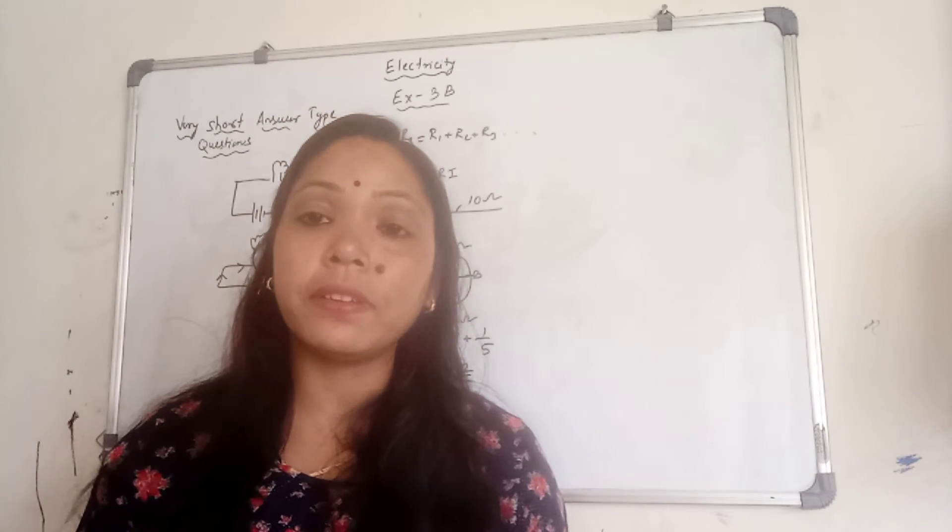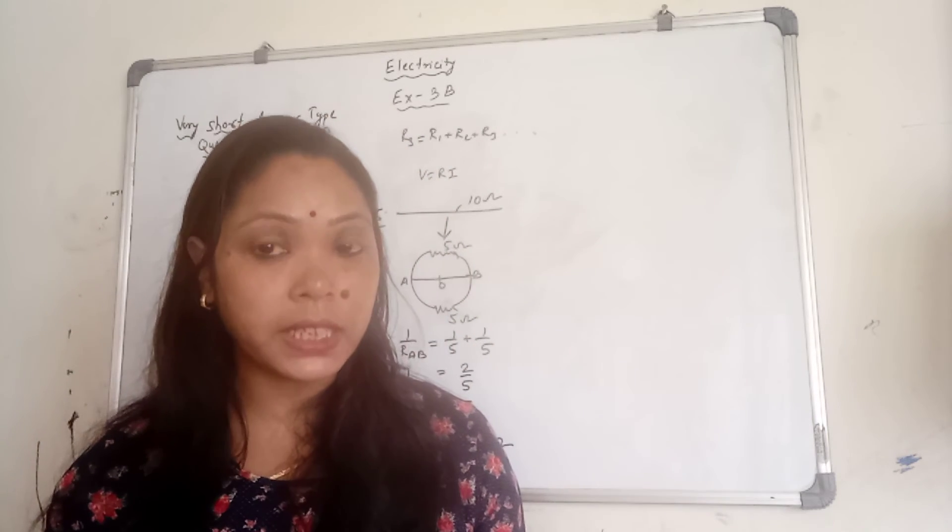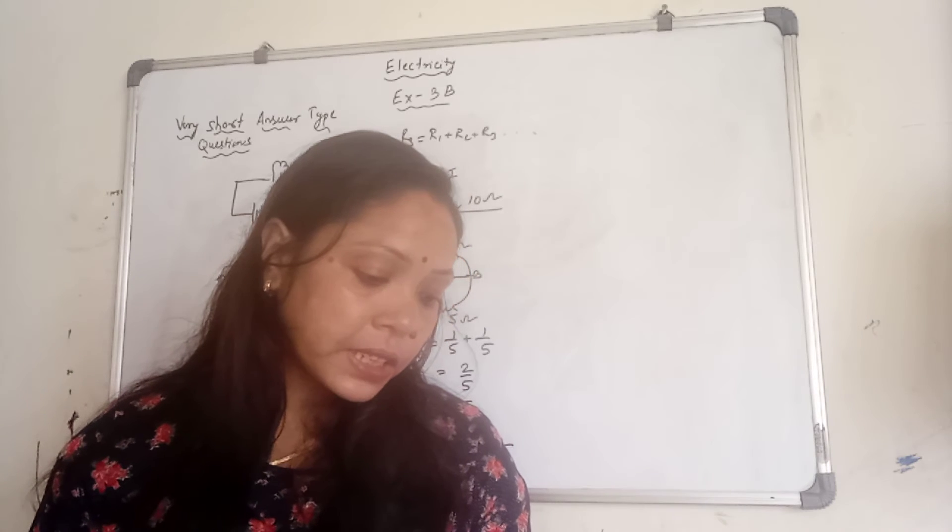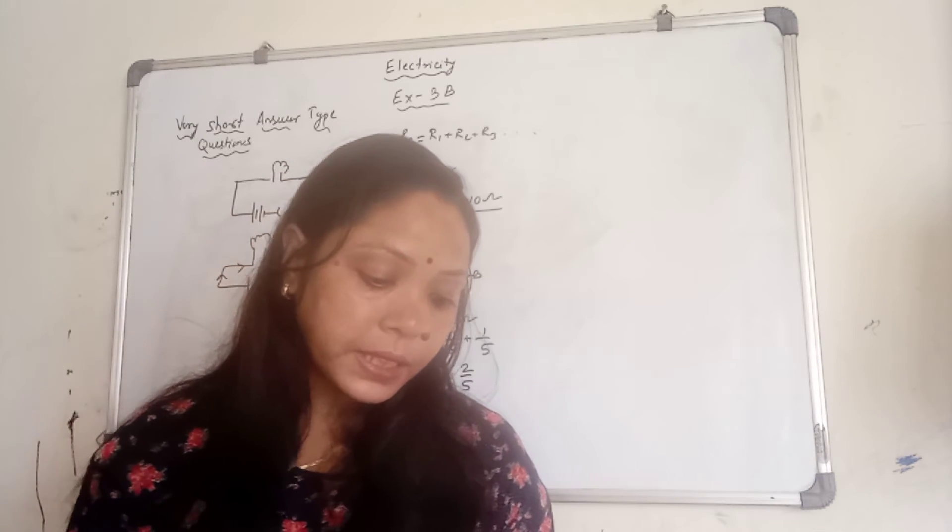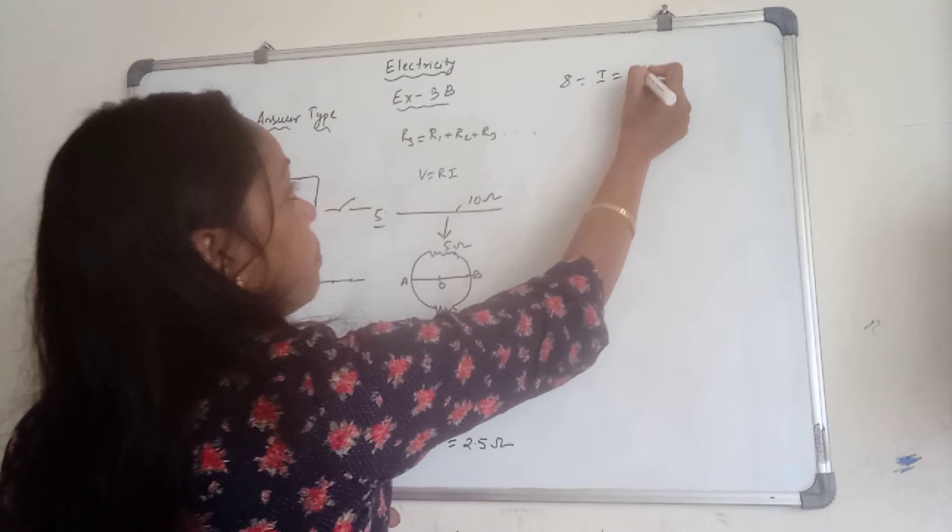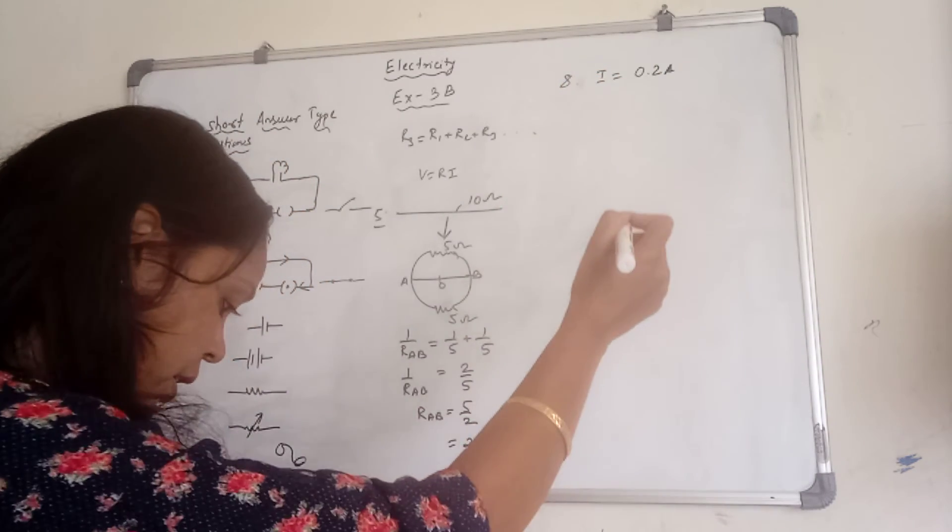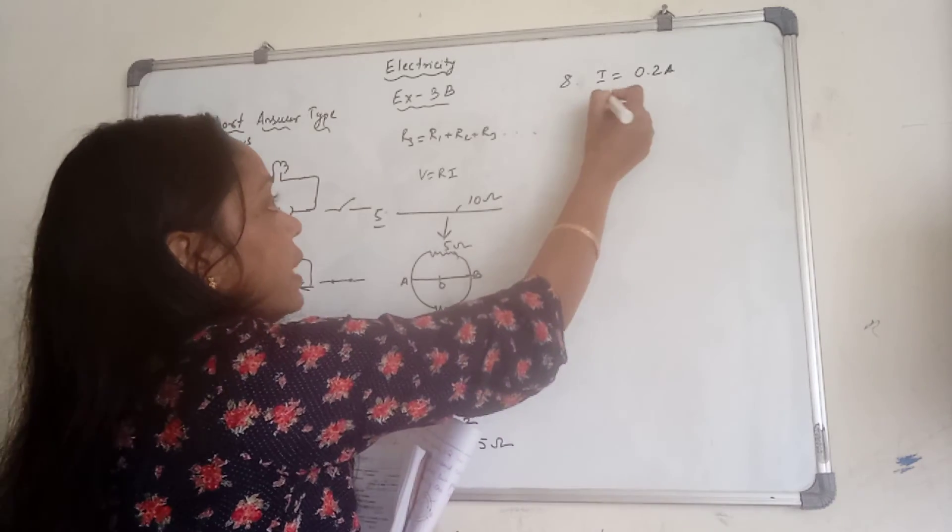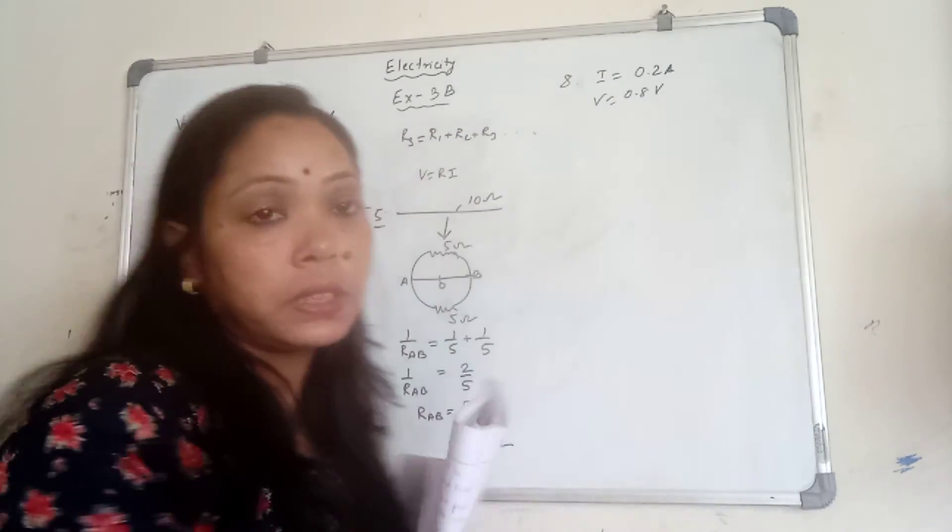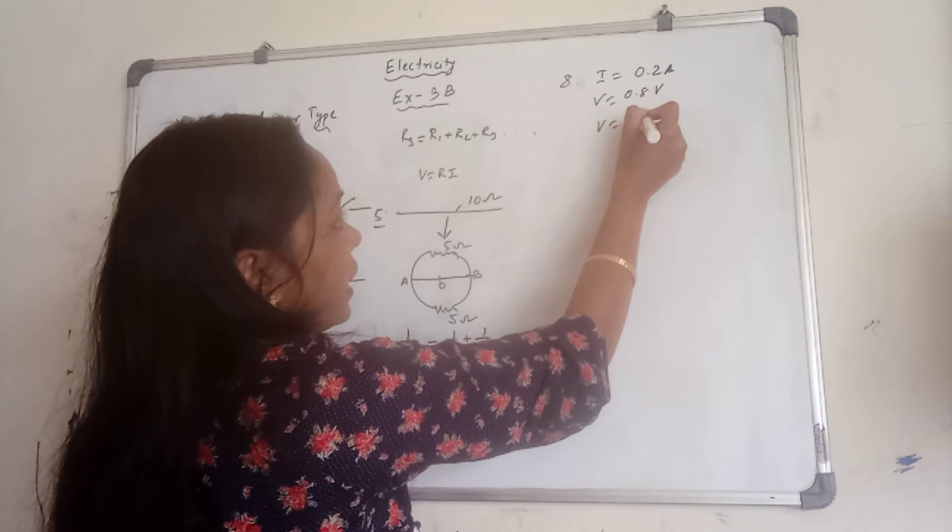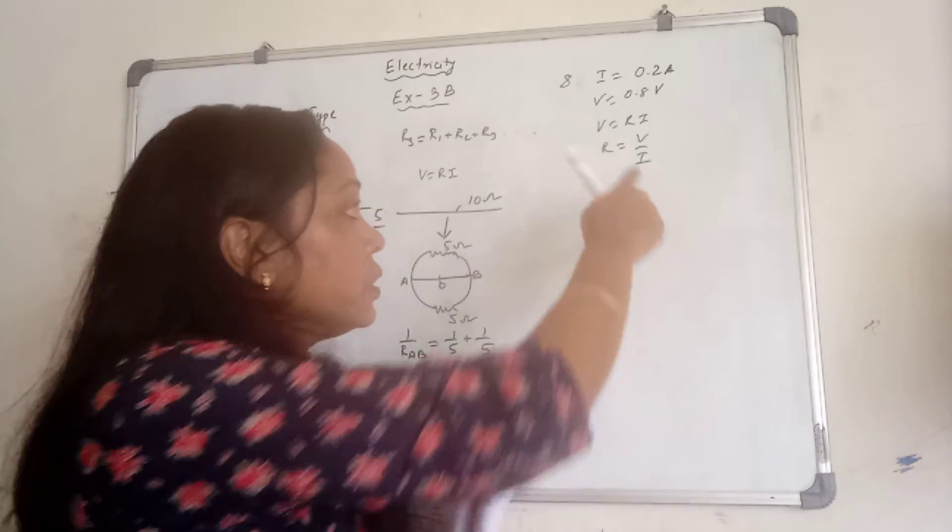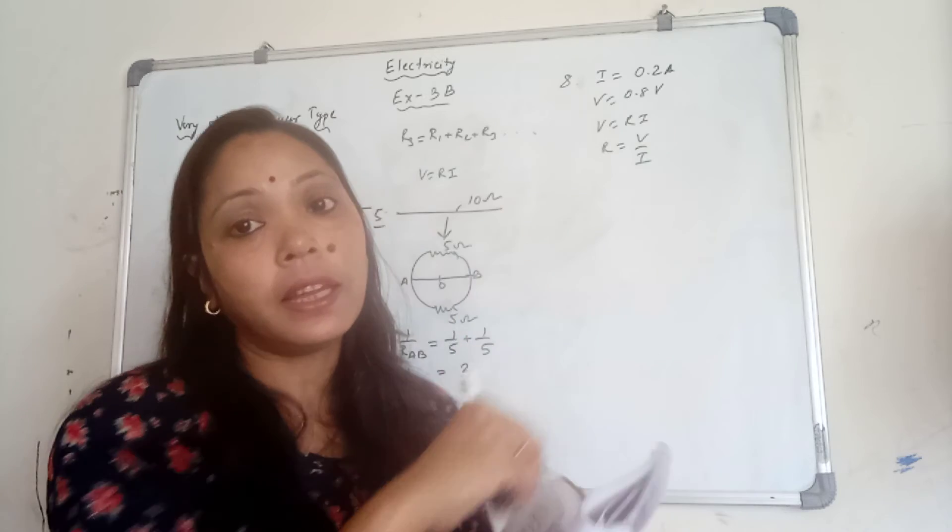Define the term resistivity of a material. You have to define the resistivity of a material. It is numerically equal to the resistance of a conductor having unit length and unit cross-sectional area. Calculate the resistance of a conductor if the current flowing through is 0.2 ampere. So, here, I is given as 0.2 ampere. Then, V is given as 0.8 volt and you have to find the resistance. So, you use the Ohm's law that is V equal to RI. So, R is equal to V by I. Put the values and solve V by I. You will get the answer for resistance.